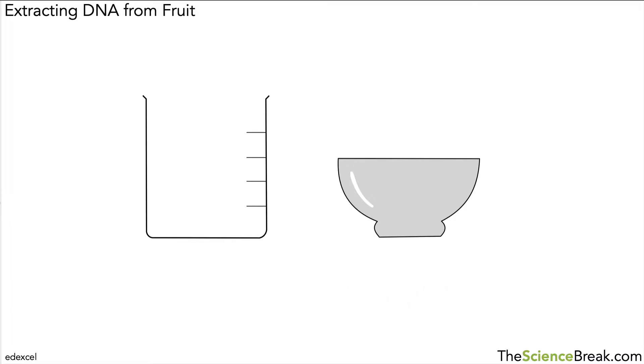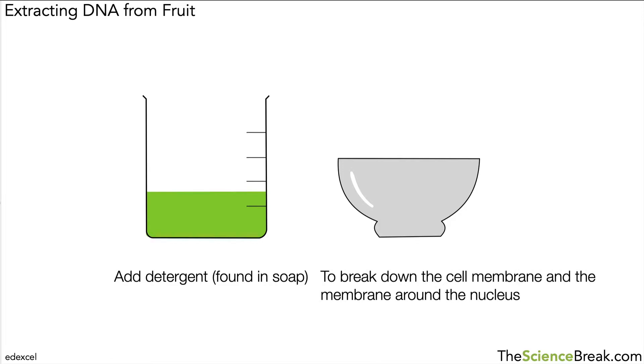Once we've done that, we can transfer it to a beaker. Then we add some detergent. Detergent is something that's found in soap, and what it does is break down the cell membranes and the membranes around the nucleus to help release the DNA.